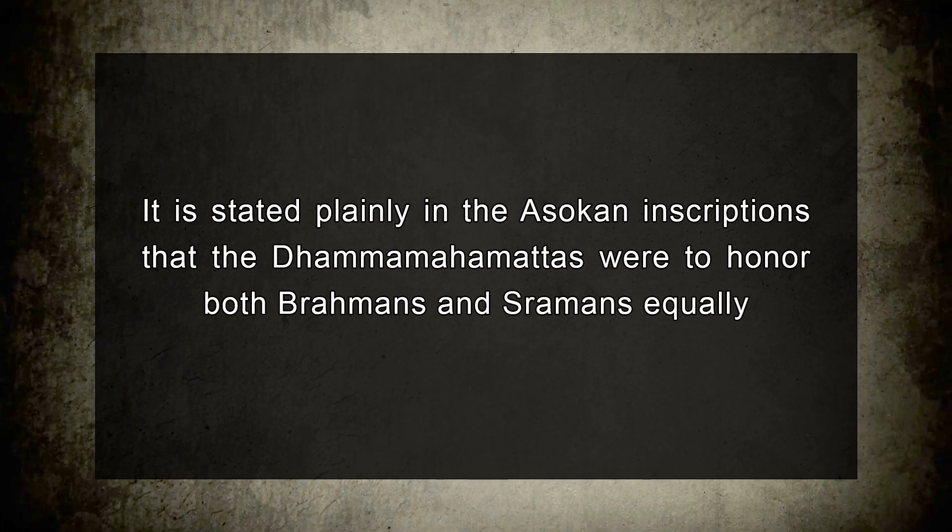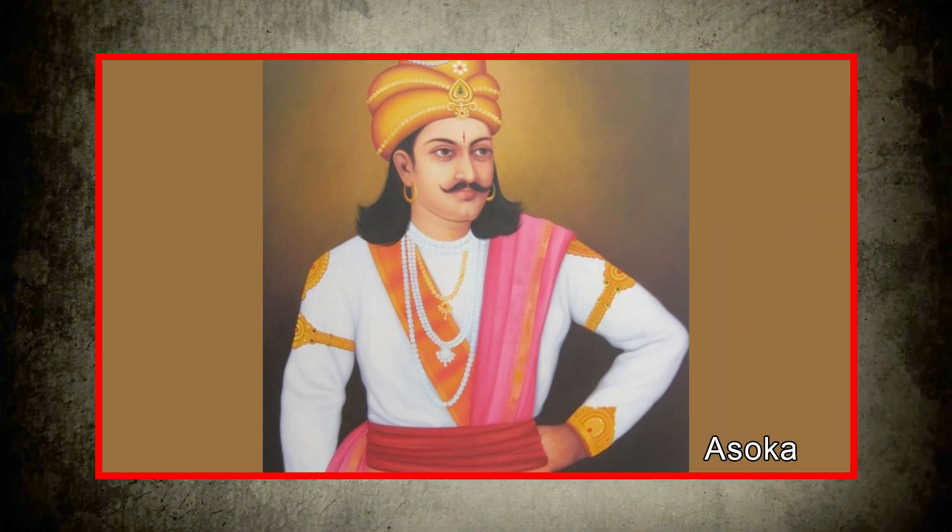These are generalizations that can be challenged. For instance, it is stated plainly in Ashoka's inscriptions that the Dhamma Mahamattas were to honor both Brahmins and Shramanas equally. It is possible, however, that these politicians lost the support of the populace over time, as can be inferred from Buddhist literature. They possessed unique rights and punishments as officials intended for the development of the Dhamma, and as a result they were feared by the people.